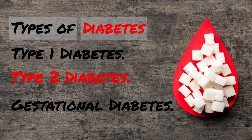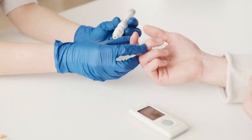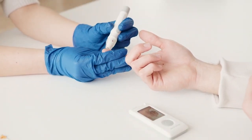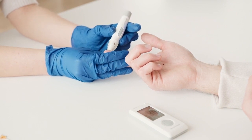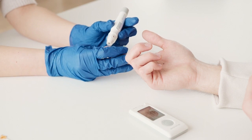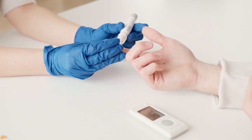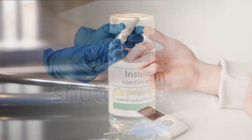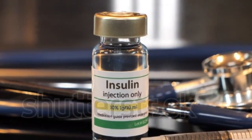Type 1 diabetes. If you have type 1 diabetes, your body does not make insulin. Your immune system attacks and destroys the cells in your pancreas that make insulin. Type 1 diabetes is usually diagnosed in children and young adults, although it can appear at any age. People with type 1 diabetes need to take insulin every day to stay alive.